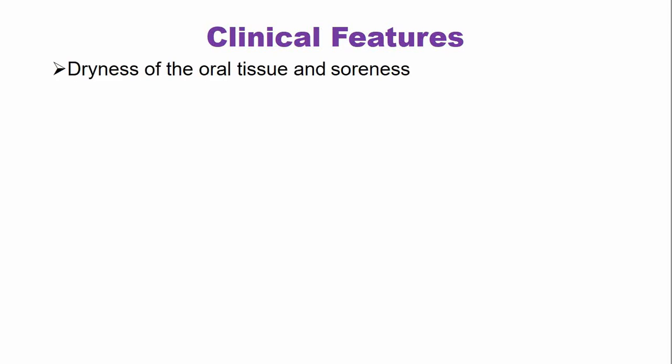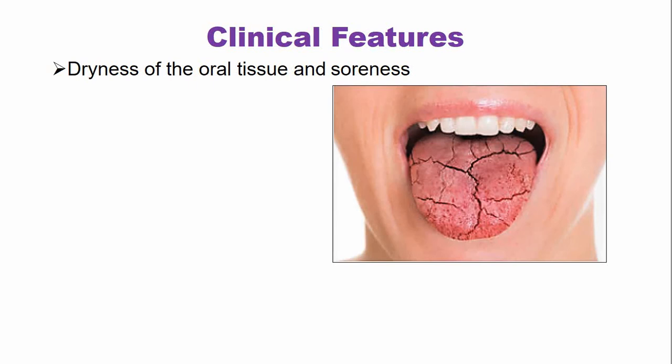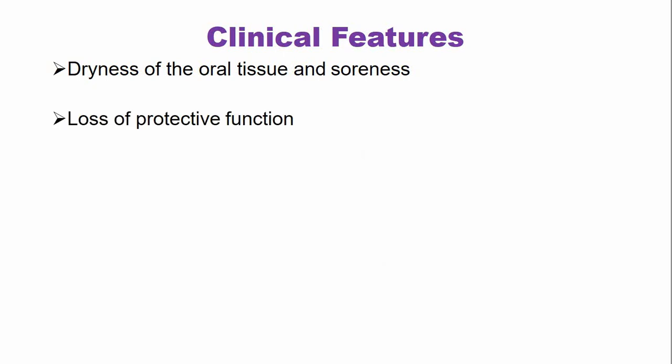What are the clinical features of dry mouth? There is dryness of the oral tissues and soreness. For example, on the surface of the tongue, there is formation of fissures and complete dryness of the tongue. There is also loss of protective function because when salivary secretion is reduced, the protective function is lost, and the oral mucosa is more prone to infections by microbes.